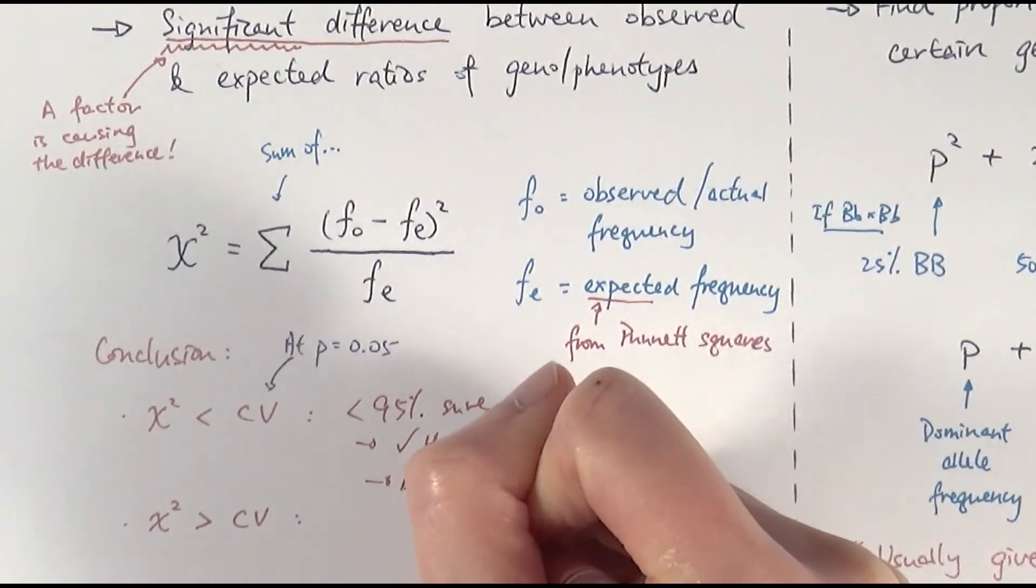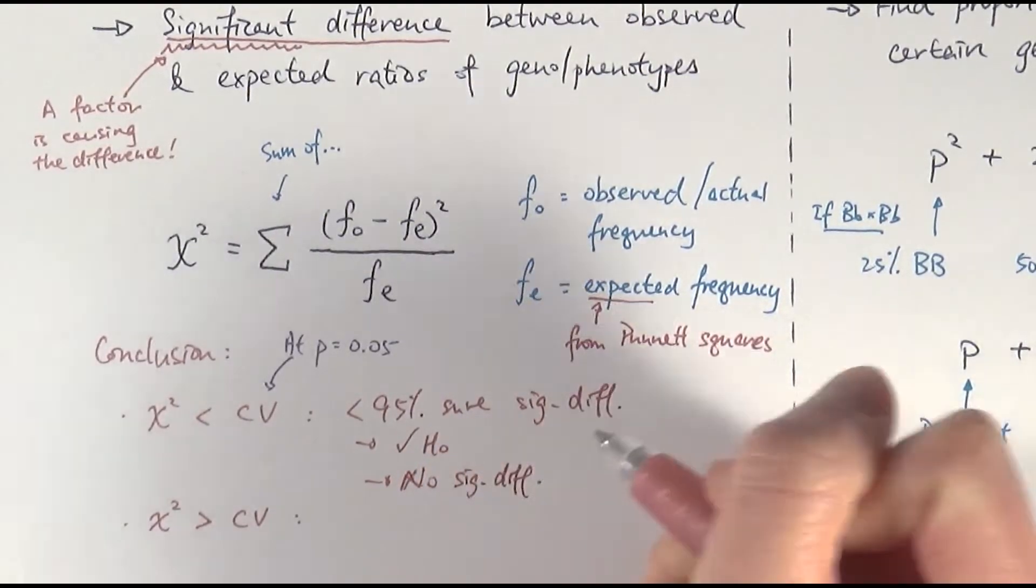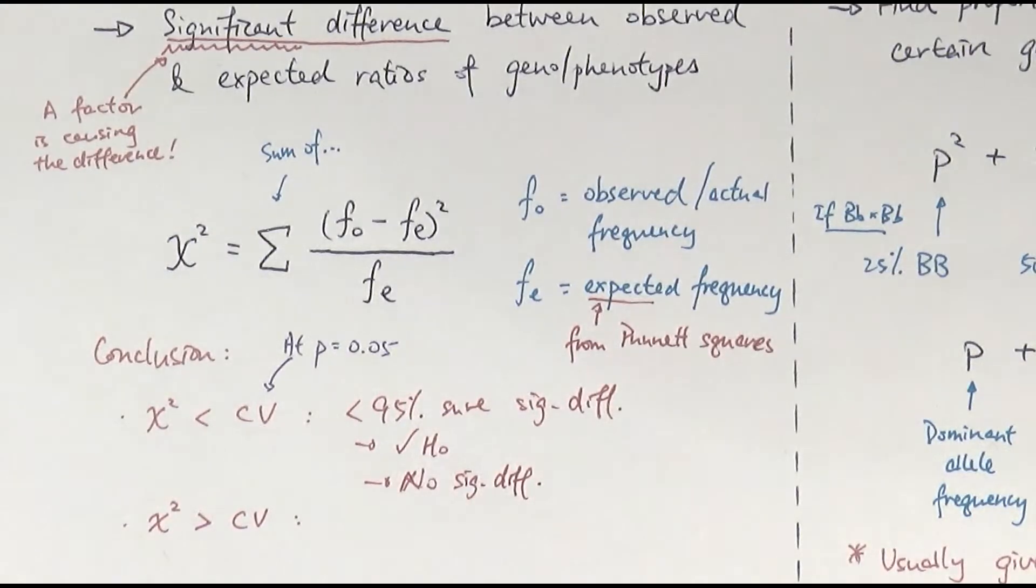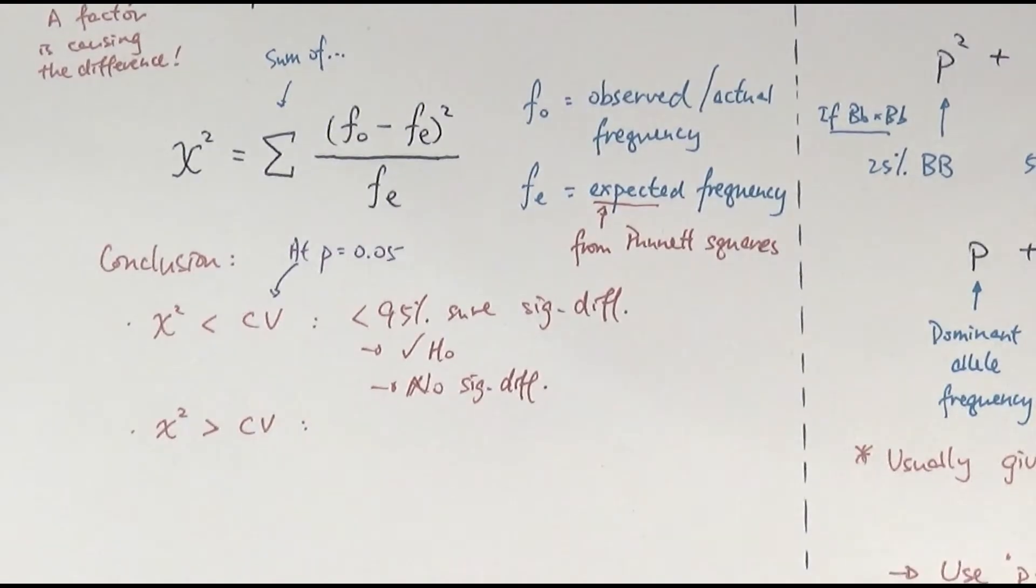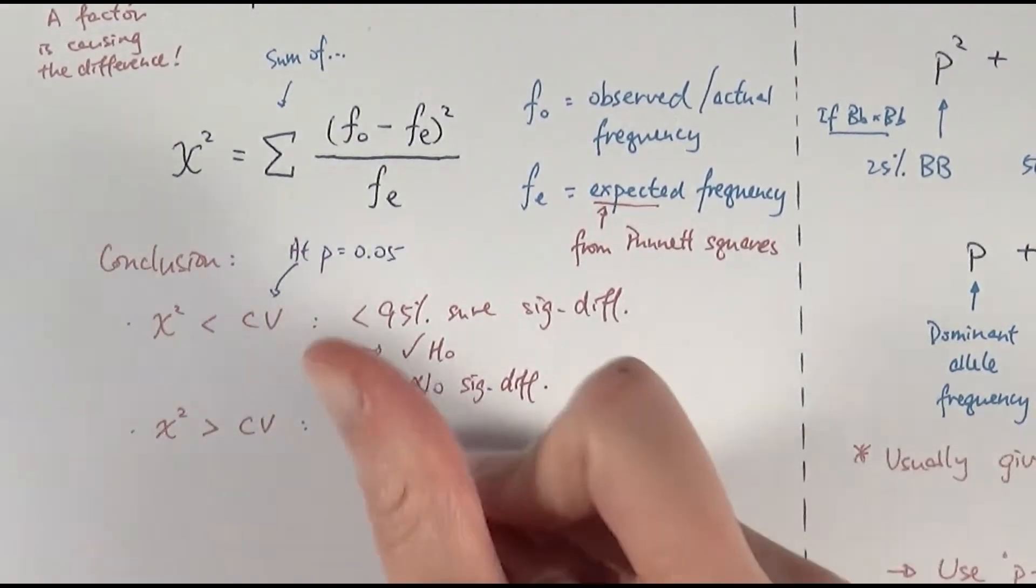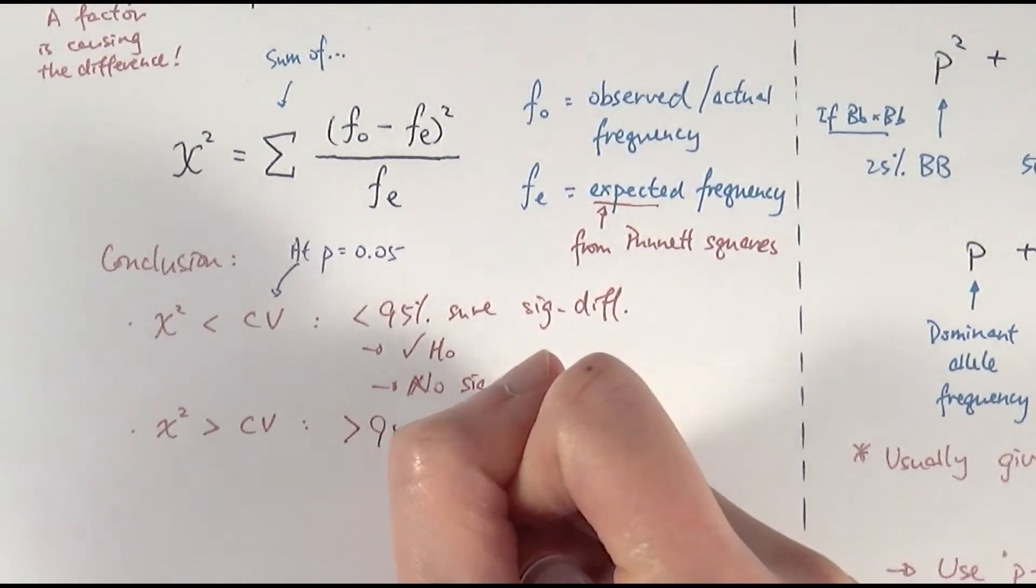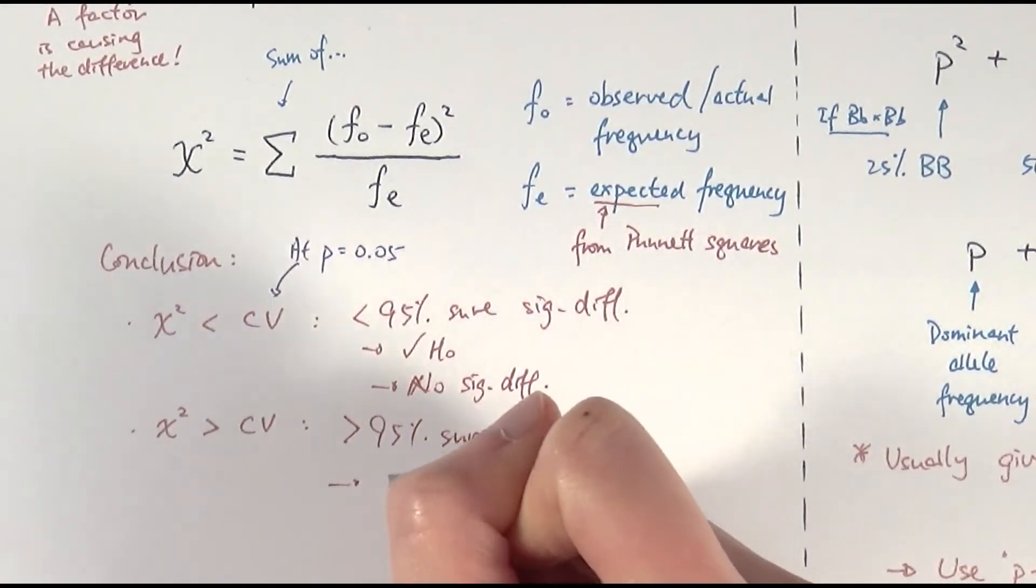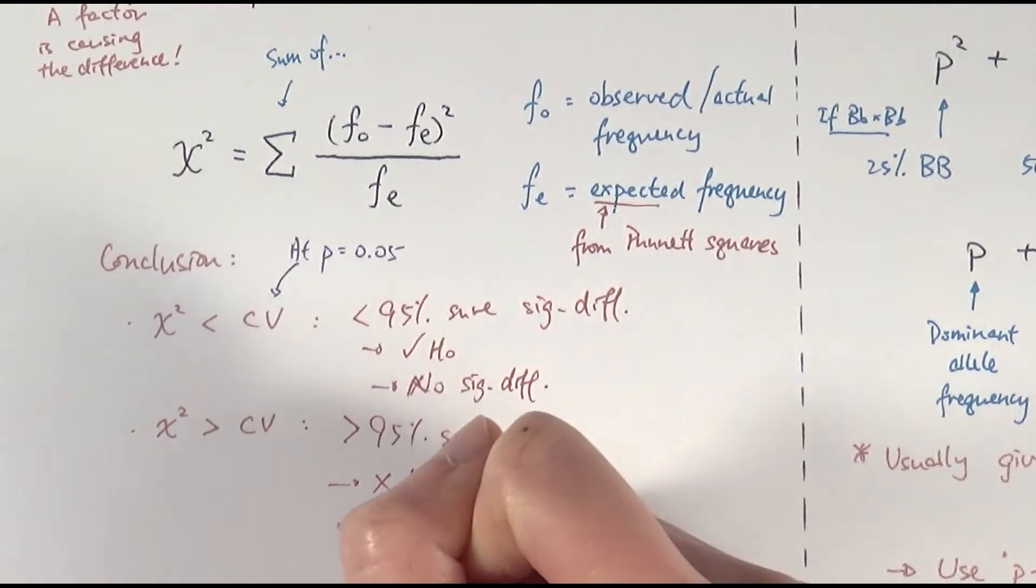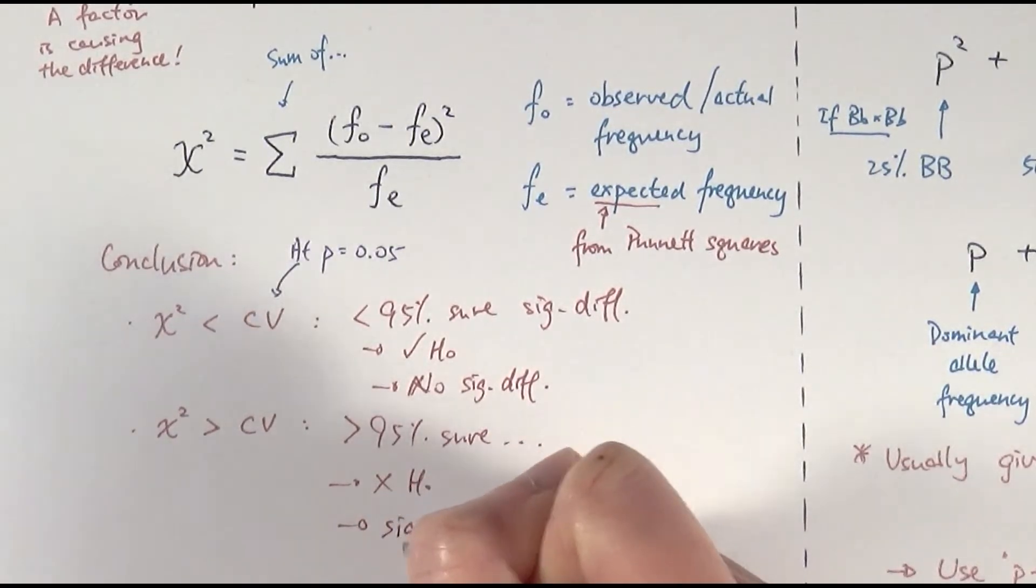And then if we're less than 95% sure, we accept the null hypothesis and we say that, okay, there is no significant difference whatsoever. So we're saying that actually the observed frequency of the phenotype of the offspring is close to what we're expected to see. So we don't see anything different happening there. So that's absolutely normal.